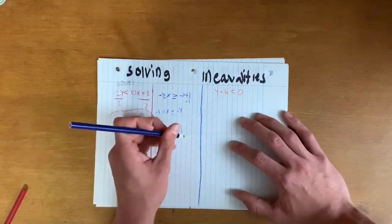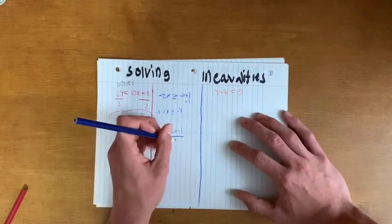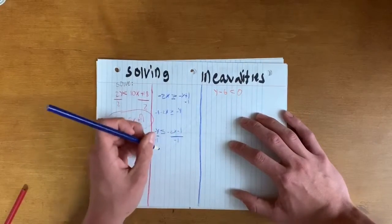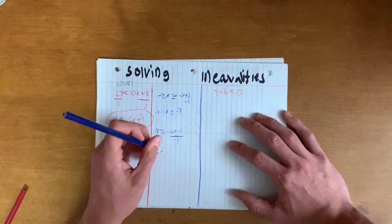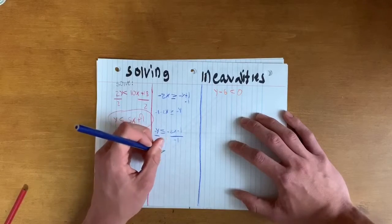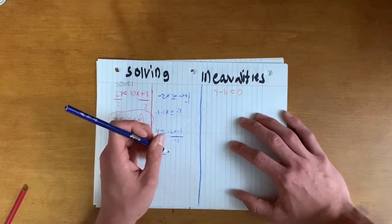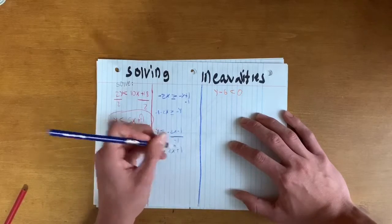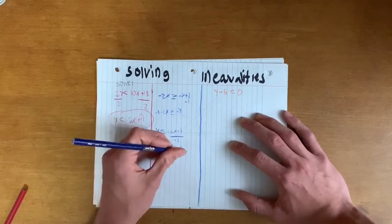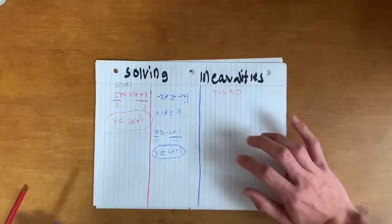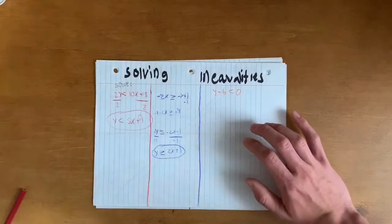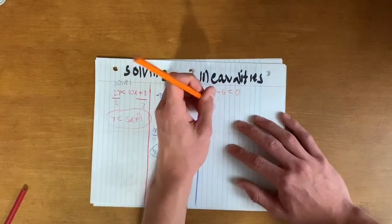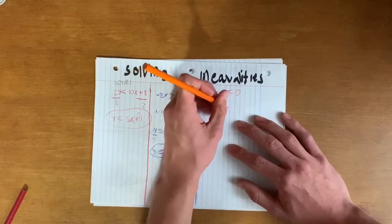Then divide everything by negative 1 to make y positive — remember to flip the sign — so now it's y ≥ 2x + 1. For the last equation, just subtract the 6 over, giving us y < 6.